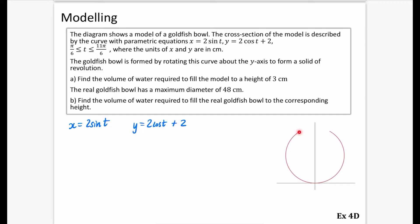So my suspicion is that one of these is π/6 and one is 11π/6, just because that's the nature of parametrics. The goldfish bowl is formed by rotating this curve about the y-axis to form a solid of revolution. Find the volume of water required to fill the model to a height of 3 centimeters. So I'm going to just add onto the diagram, this is going to be a height of 3 centimeters.